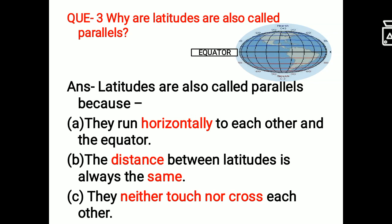Question number 3. Why are latitudes also called parallels? Answer. Latitudes are also called parallels because they run horizontally to each other. The distance between latitudes is always the same and they neither cut nor cross each other.